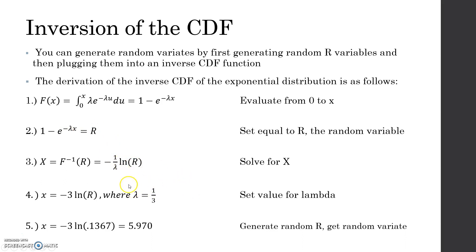In the book, they set a value for lambda, which is just one third. So when you plug that in, you get X is equal to negative 3 natural log of R. And then here's where you generate your random variables R. So if your random R is 0.1367, then your random variate X is 5.97.